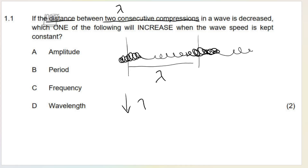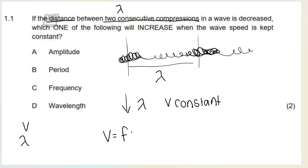So if we decrease the wavelength, they are asking which one of the following will increase if wave speed is kept constant. Think about what formula has these variables - wave speed, wavelength. When talking about longitudinal waves, you should know this formula: the wave speed of a wave is equal to the frequency of the wave multiplied by the wavelength.